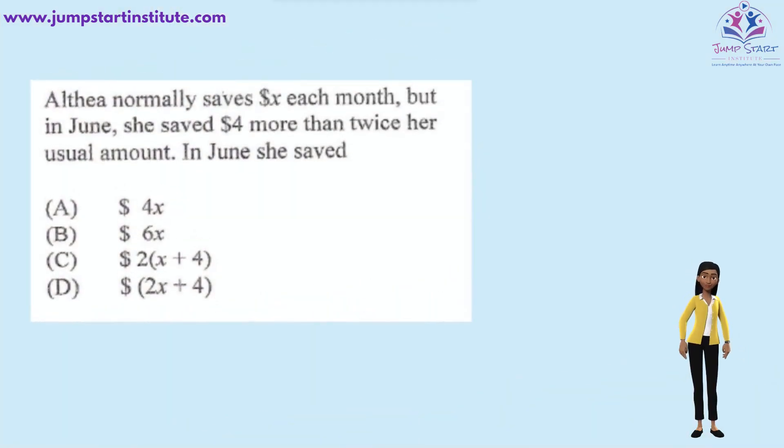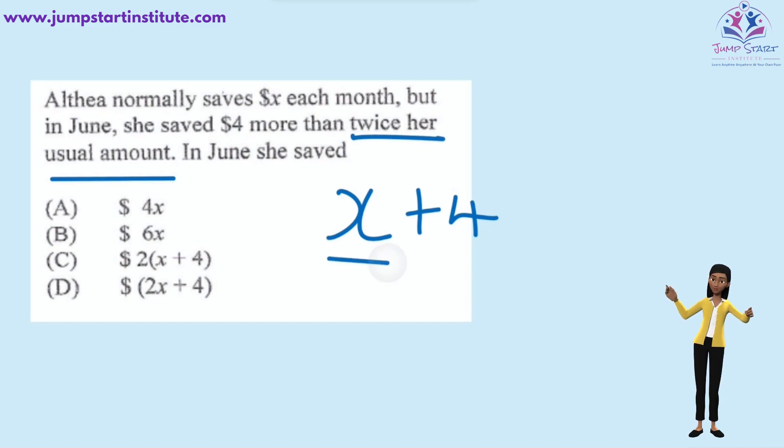Alfie normally saves x dollars each month. But in June, she saved $4 more. $4 more, we would have to add $4. But the question went on to say $4 more than twice her usual amount. Her usual amount is x. So, twice that would be 2x. Therefore, the answer is D, 2x plus 4.